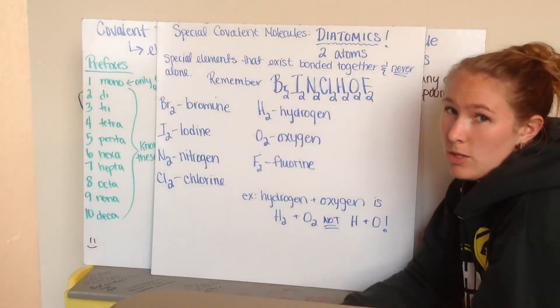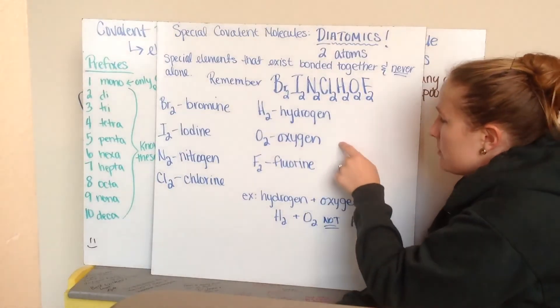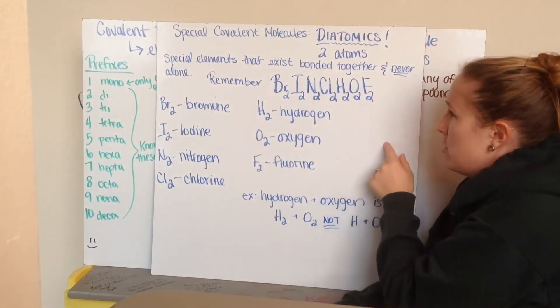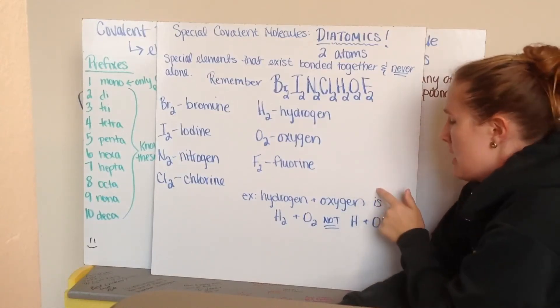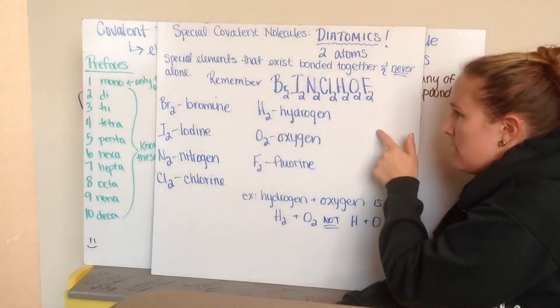You can also know that you have the Magnificent Seven, starting with nitrogen, oxygen, fluorine, down to bromine, chlorine, and iodine on your periodic table. It does make a seven with hydrogen at the top.